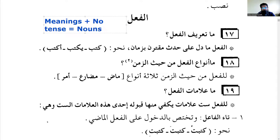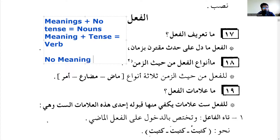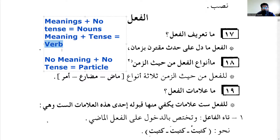Meanings with no tense give you nouns — names and words with no time element. But if you have a meaning, a hadath, which is with tense, that is equal to a verb. And if there is no specific meaning and no tense, that is a particle. So the three parts of speech in Arabic are ism, fi'l, and harf: meaning plus no tense is a noun, meaning plus tense is a verb. A particle like 'min' might seem to mean 'from,' but its meaning can change contextually.